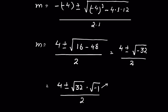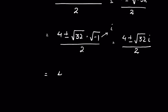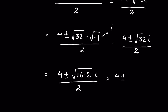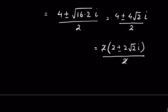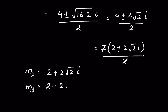We write the square root of minus 32 as the square root of 32 times the square root of minus 1. Since the square root of minus 1 is the imaginary unit i, this becomes the square root of 16 times 2 times i, which equals 4 root 2 times i. Taking 2 as a common factor in the numerator gives 2(2 plus or minus 2 root 2 i) over 2, and cancelling gives m equals 2 plus 2 root 2 i or m equals 2 minus 2 root 2 i.